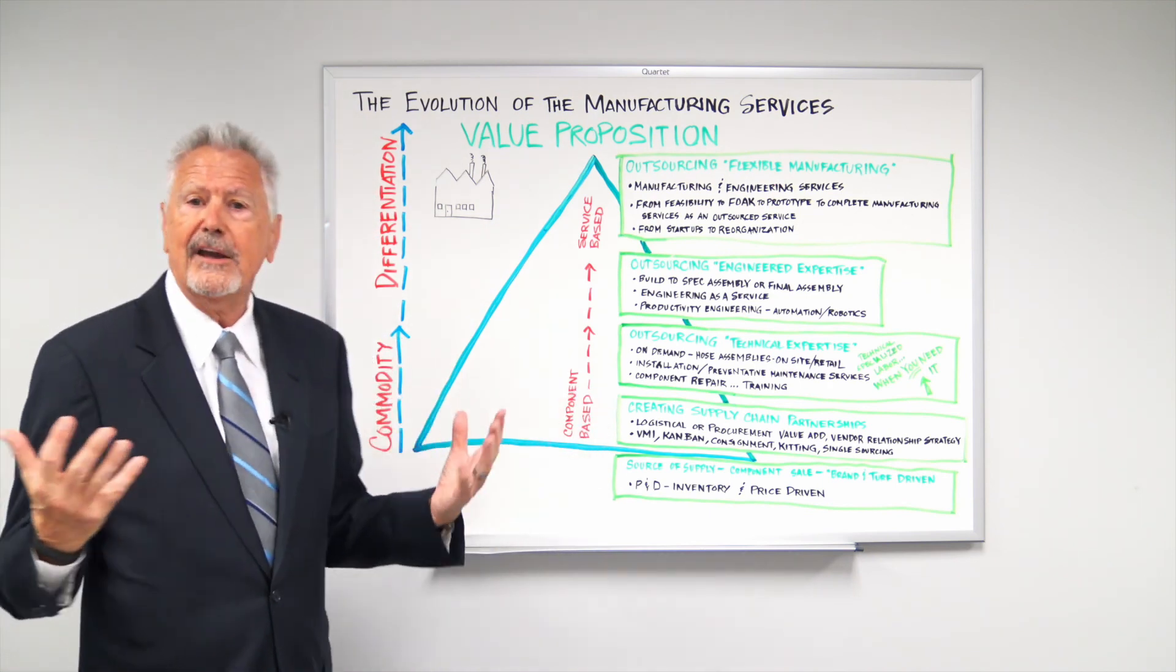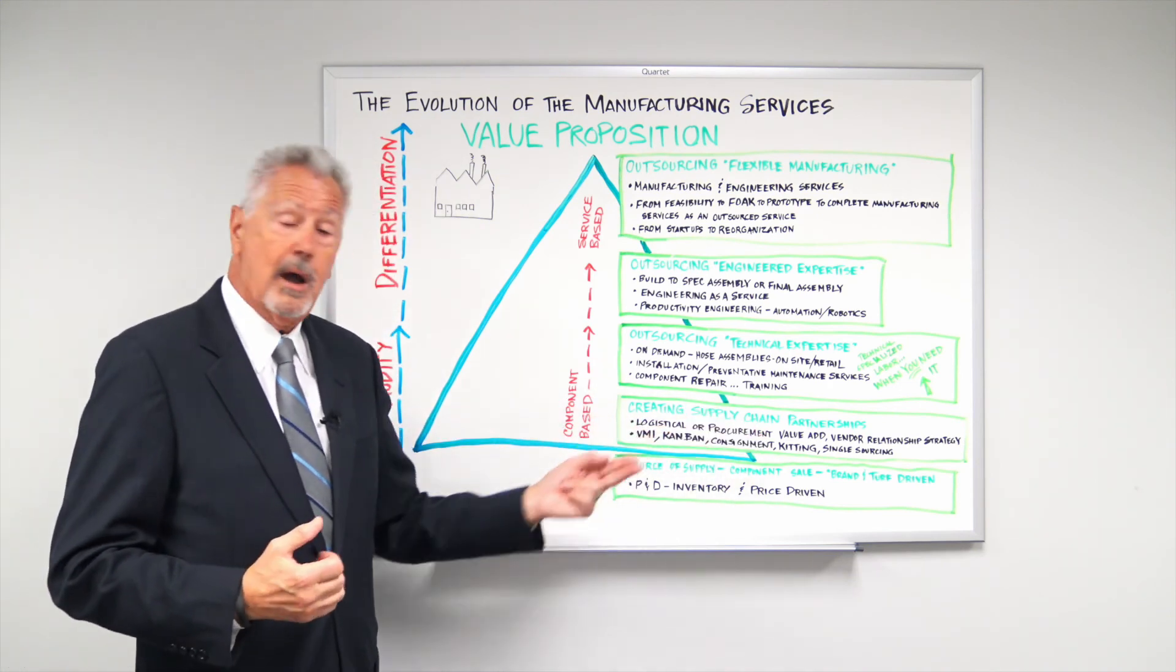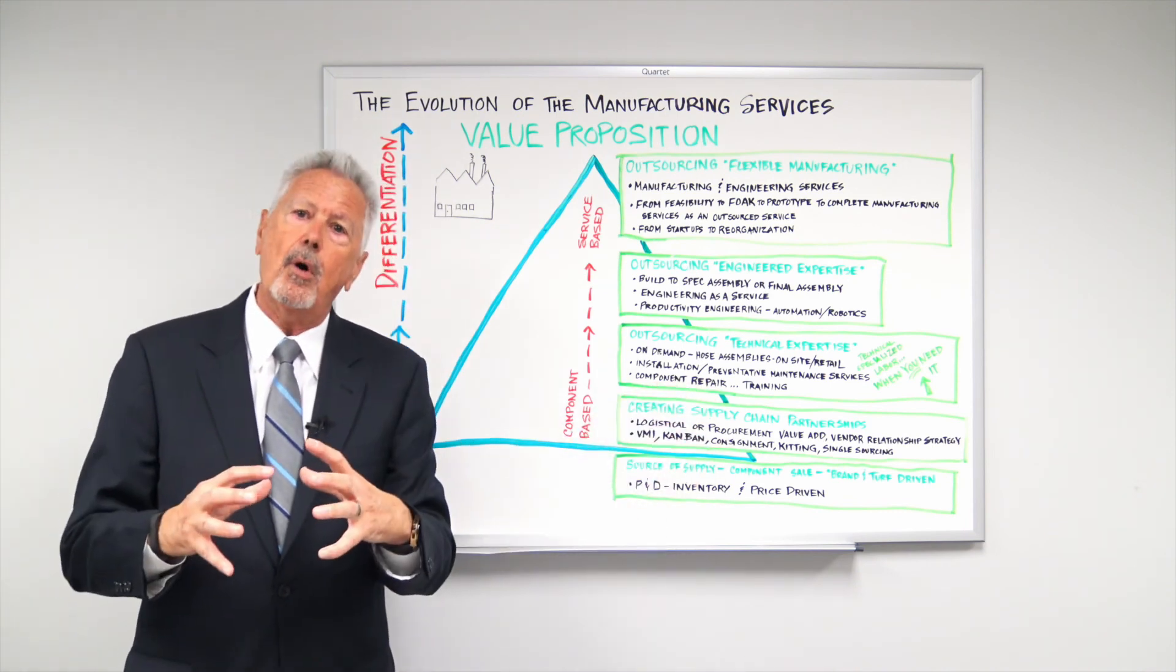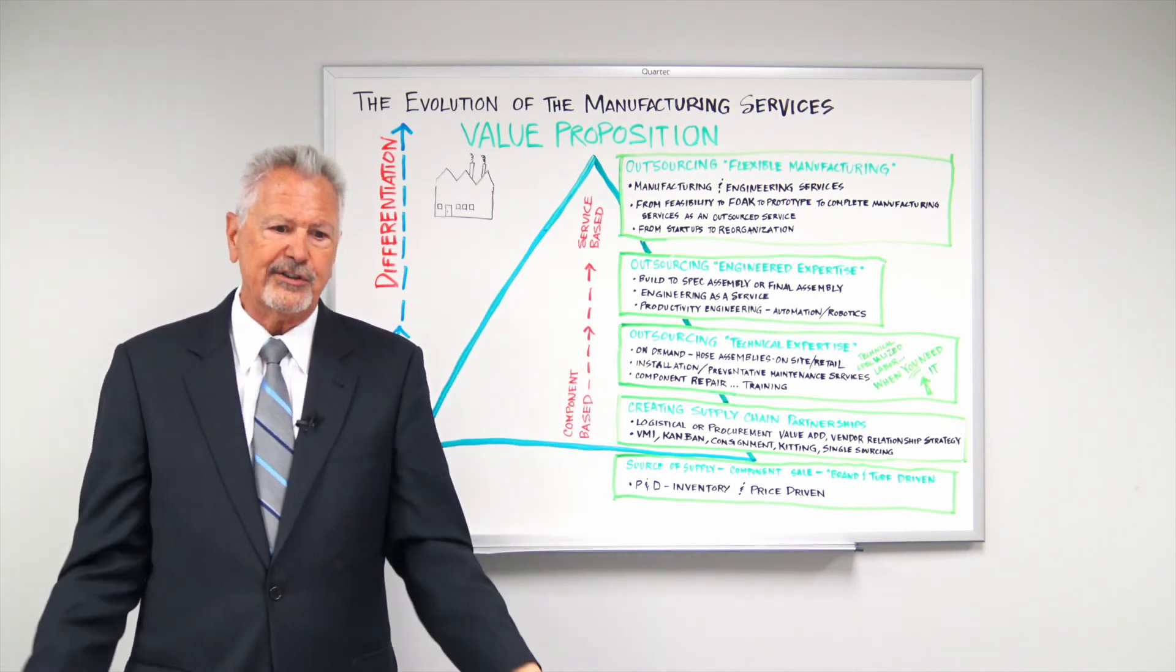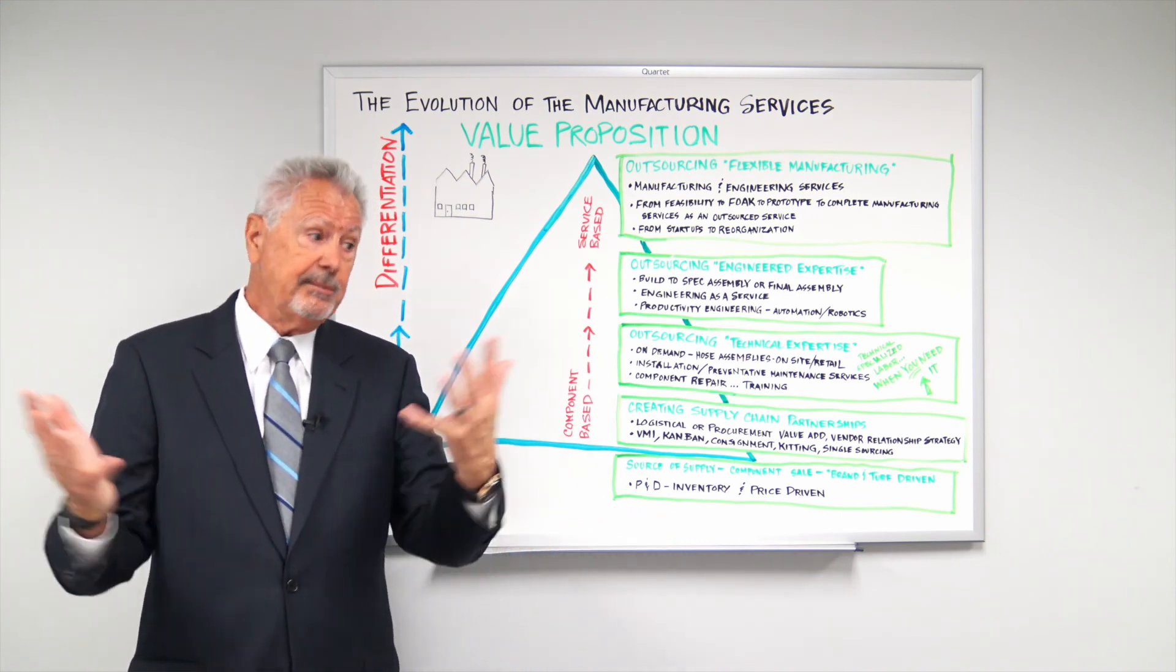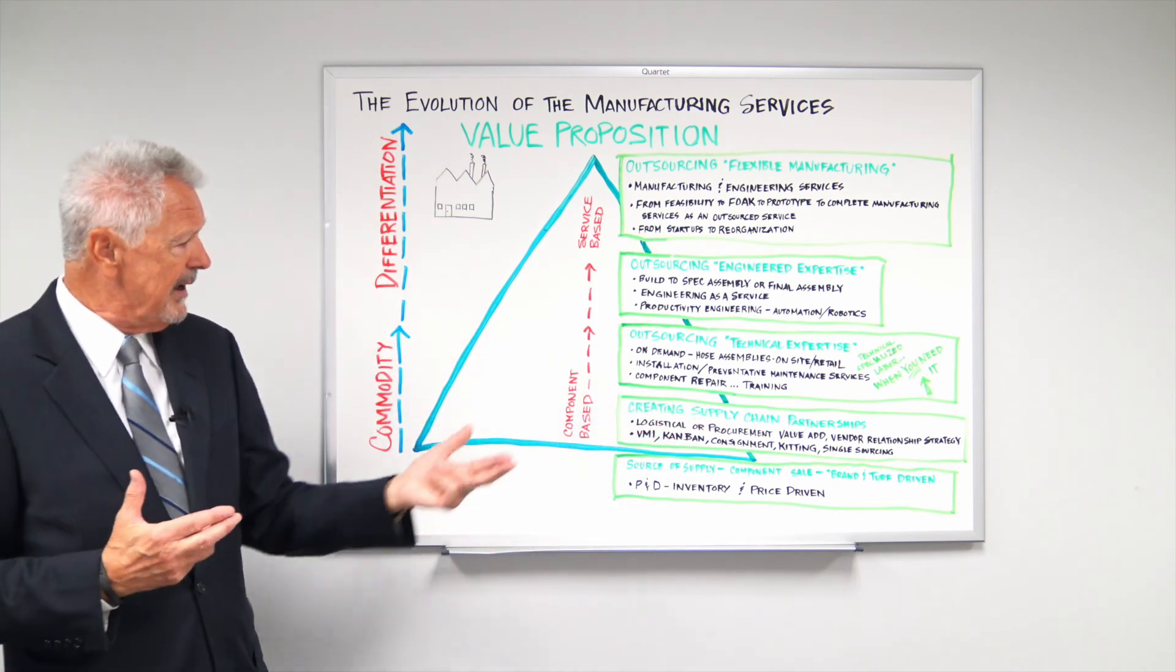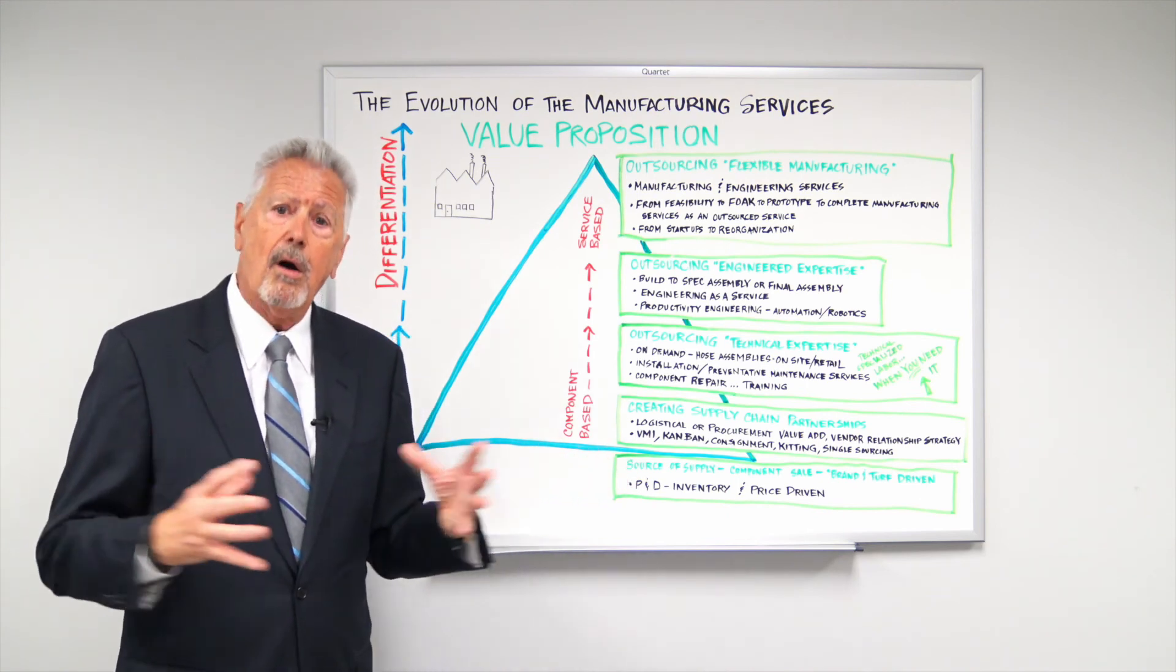How do we do that? A variety of value added services, including VMI, Vendor Managed Inventory, Kanban, just another name for it. Consignment, kitting, and of course, customer single sourcing. All these things reduce the soft cost for a manufacturer. So it takes that transitional and transactional cost and drives it down to make it much more effective for the supply chain in the short term and sometimes in the long term. This is sort of the first step from that really brand and turf side up to the supply chain partnership. And this has been going on for a long period of time and is still a very viable service offered to manufacturers.